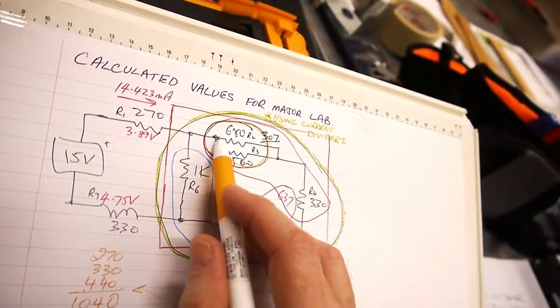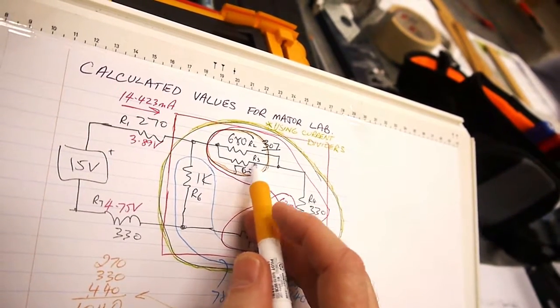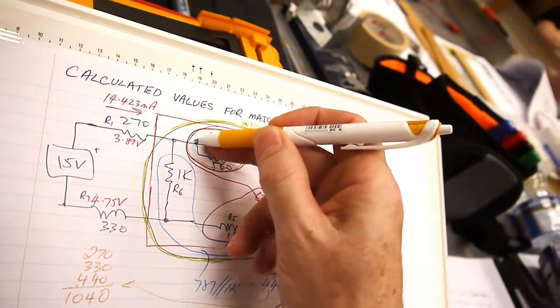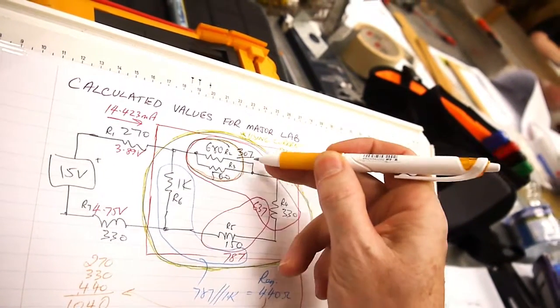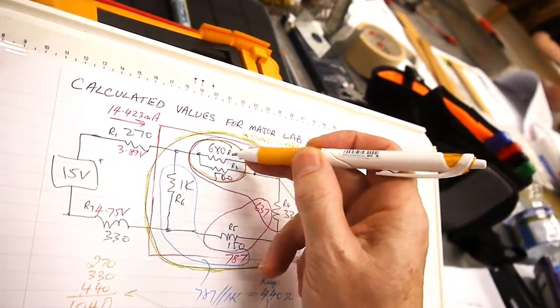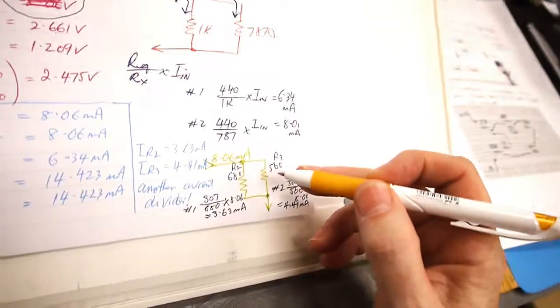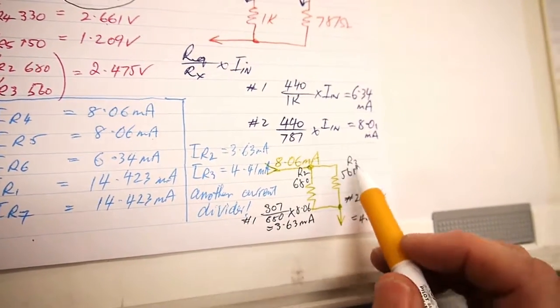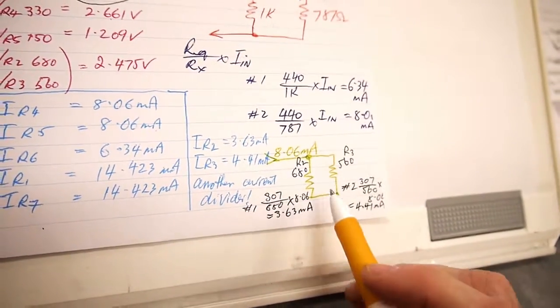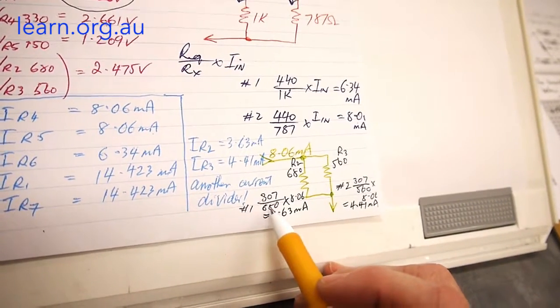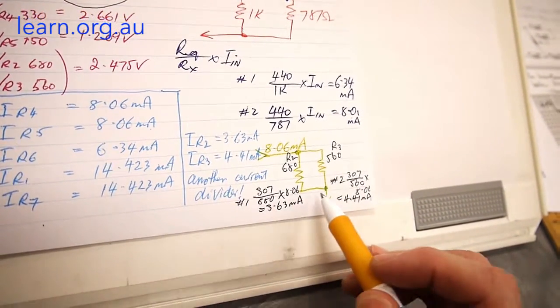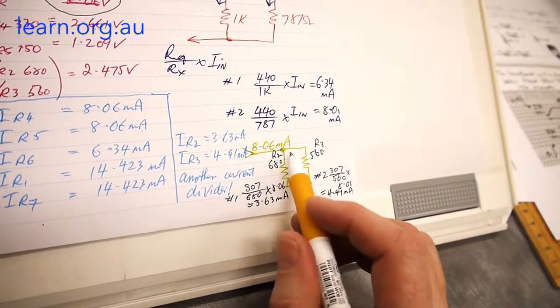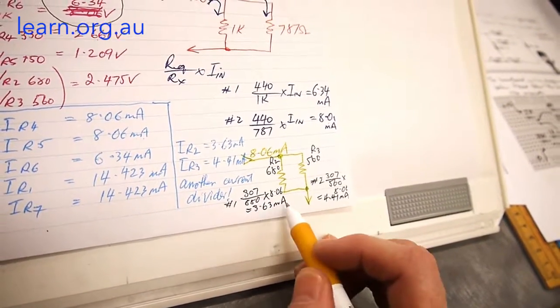That leaves IR2 and IR3, a little bit tricky. You've got another current divider. The current coming into these two resistors splits, part through 680, part through 560. We knew there was 8.06 milliamps traveling down through this network. The calculations are REQ divided by R2 and REQ divided by R3, in both cases multiplied by 8.06 milliamps. We get 3.63 milliamps for IR2 and 4.41 milliamps for IR3.